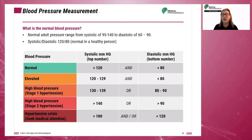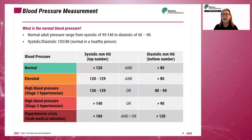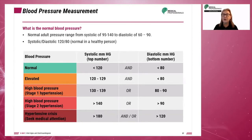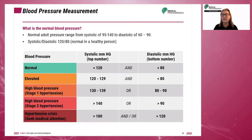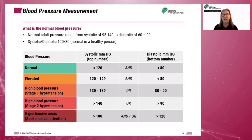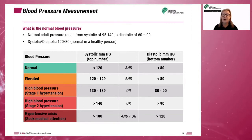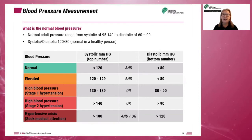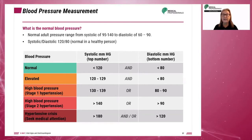Pressure above 140 over 90 is hypertension. Pressure less than 95 over 60 millimeters of mercury is hypotension. Hypotension may result from burns, diarrhea, vomiting, shock, bleeding, trauma, or heat exhaustion.